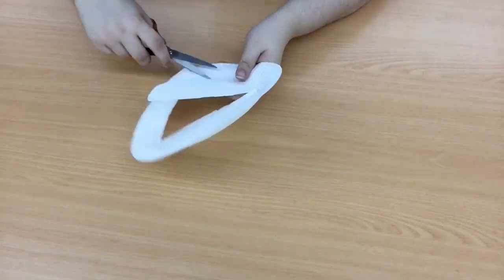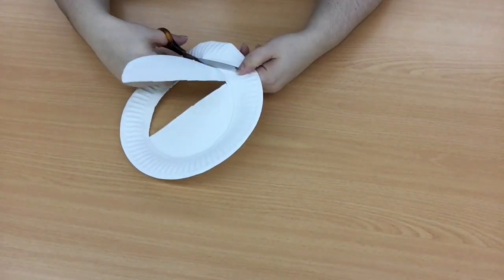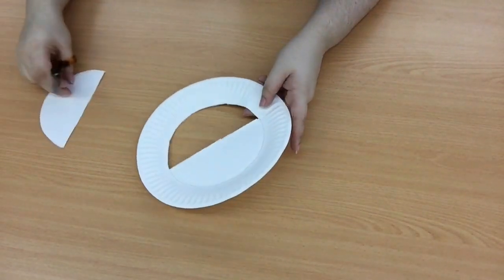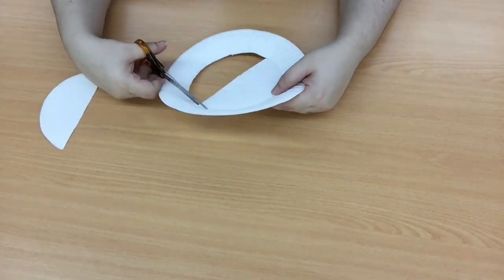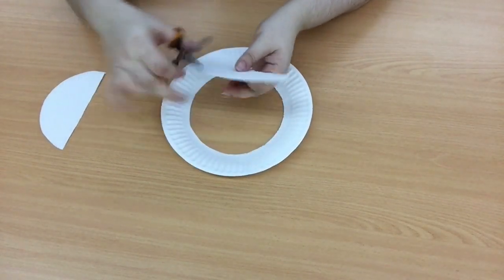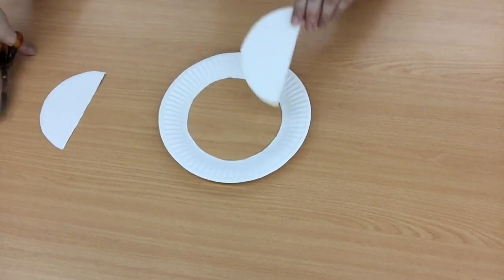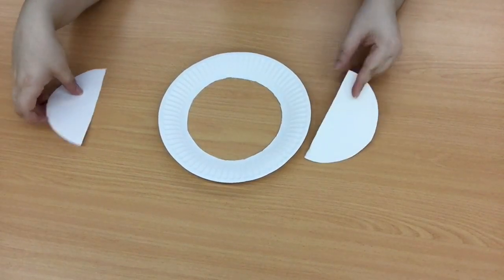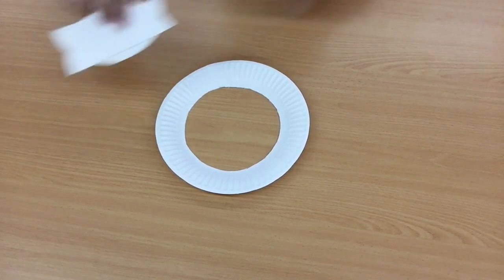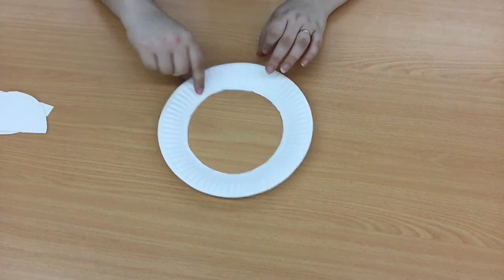You should end up with two semi-circles. First one done, put it off to the side. Now we cut the other one out. This one should be much easier to cut. Now we have two semi-circles. These are going to be our bunny ears. Put them off to the side for a moment.